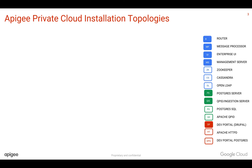Apigee uses open source components like Zookeeper and Cassandra, as well as Apigee-built in-house components that power the Apigee Edge API management platform.